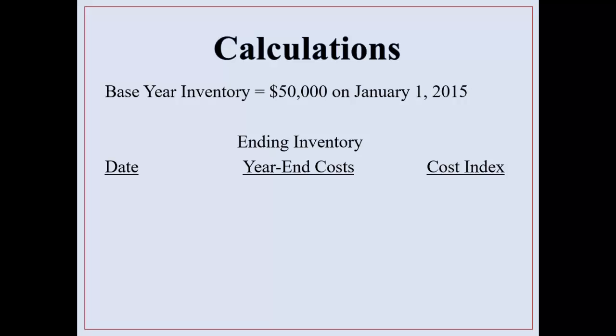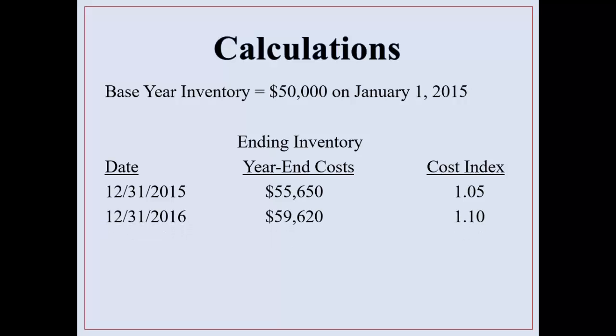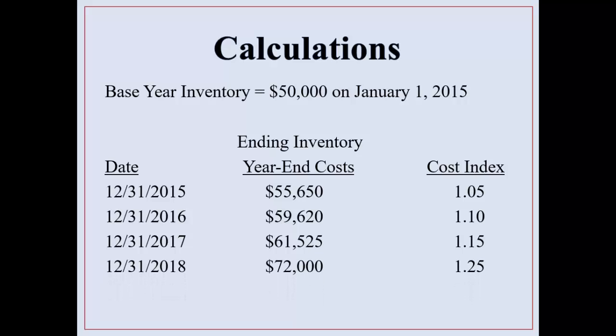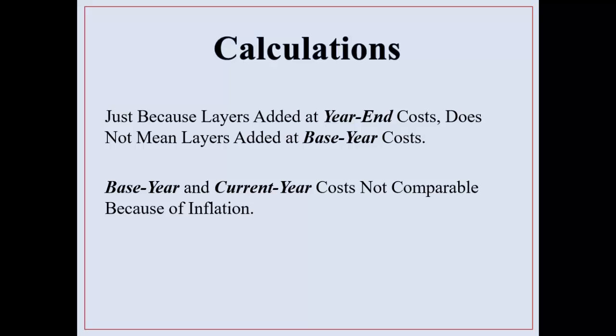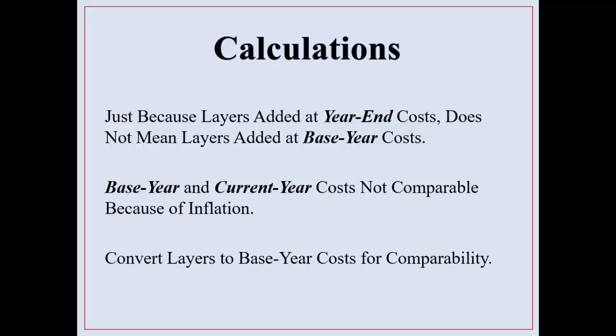Let's look at an example. Base year inventory is $50,000 on January 1, 2015. Ending inventory year-end cost is $55,650, so we have a cost index of 1.05. Next year, ending inventory costs give a cost index of 1.1 in 2016 — you can think of this as an inflationary effect over the years. Keep in mind that just because layers are added at year-end cost does not mean layers were added at base year cost. Because of inflation, it doesn't necessarily mean more units were added, just that a dollar value was added. Dollar value LIFO converts your layers to a base year cost for comparability.